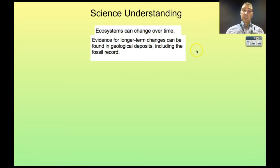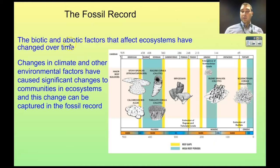The science of the studies we're going to look at: ecosystems can change over time. Evidence for longer-term changes can be found in geological deposits, including the fossil record. The biotic and abiotic factors that affect ecosystems change over time. So changes in climate and other environmental factors have caused significant changes to ecosystems, and these factors can be captured in the fossil record.